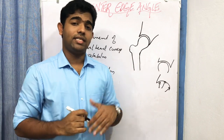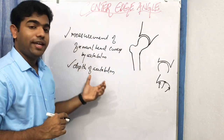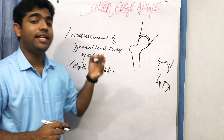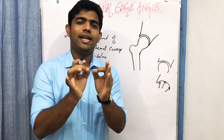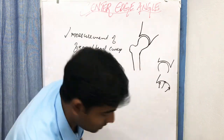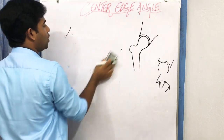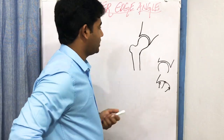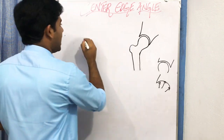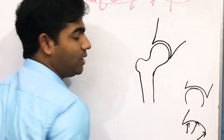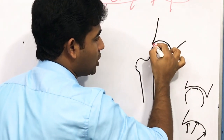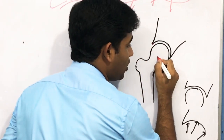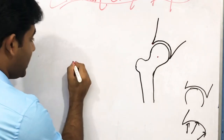So to summarize: the center edge angle is used for finding out femoral head coverage by the acetabulum and also the depth of the acetabulum. Now, to form this angle, we need two lines. The first line joins the lateral margin of the acetabulum to the center of the head of the femur.